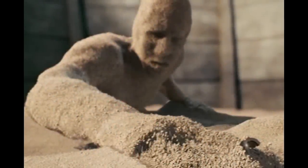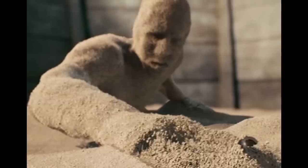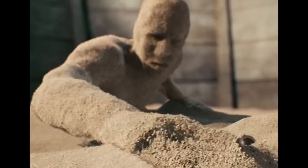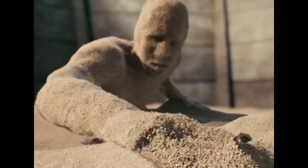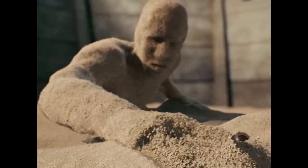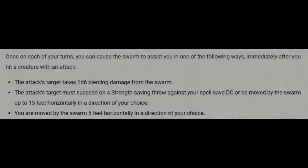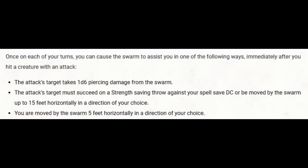But if you're brainstorming ideas, that might get you started. The suggestion that kind of spoke to me was sand, because I thought of Sandman from Spider-Man, and I thought, yeah, that would be kind of cool — that you're manipulating the sand like Sandman would to do these special things. Here is what Gathered Swarm does: once on each of your turns, you can choose one of three options after you hit a creature with an attack. Either you can have the target take a d6 piercing damage from the swarm, or you can have the target make a Strength saving throw against your spell DC or be moved 15 feet in a horizontal direction of your choice, or you can move yourself 5 feet horizontally in the direction of your choice.